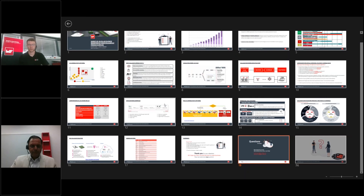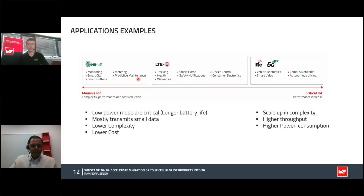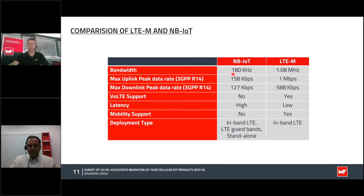Thanks, Markus — that's a very interesting question. If your application's requirement is only to transmit small data and it does not need connected mode mobility, then NB-IoT is a perfect fit. On the other hand, if you need mobility along with higher data rates, then LTM is the better choice. Maximum data rates for LTM is up to 1 Mbps. So if you need higher data rates in both uplink and downlink directions, go for LTM; if lower data rates are sufficient, go for NB-IoT.